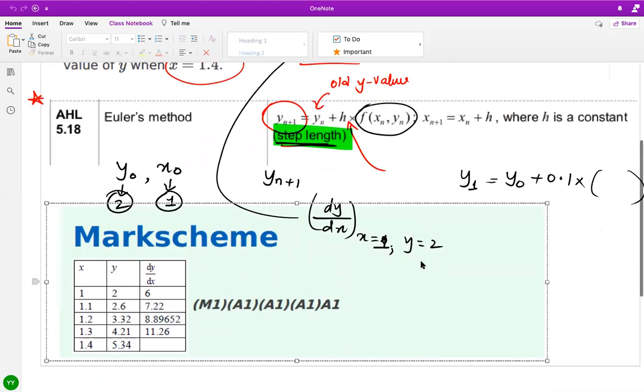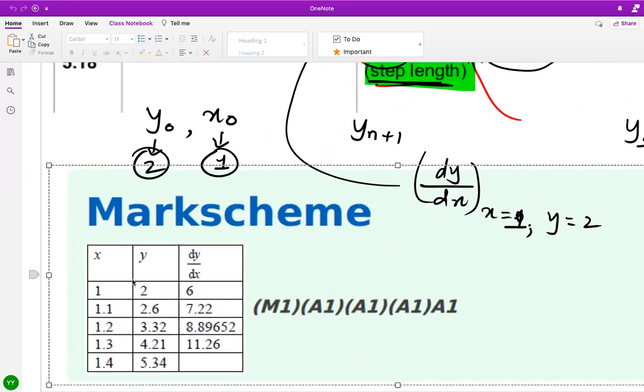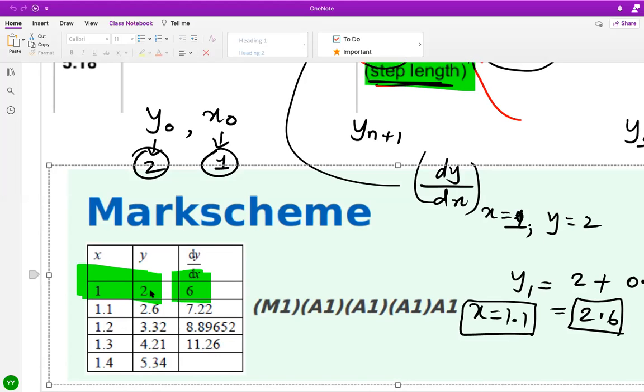We get a table. Initially, when x is 1, y value is 2, and the derivative is 6. To get y₁, I'm going to plug in y₀, which is 2, plus h times 0.1 times 6, which gives 2.6. This is the y value when x is 1.1.